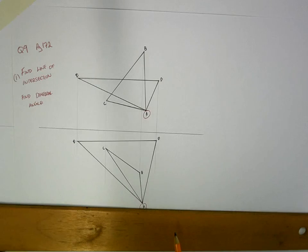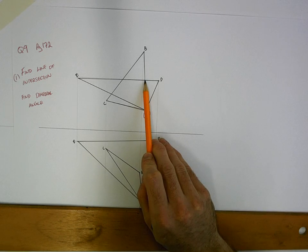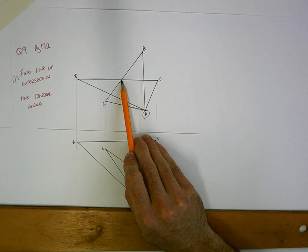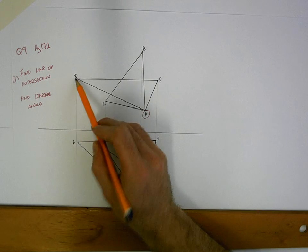That line is cutting through both of the planes. It cuts through the plane ABC at this point and this point. And it cuts through the second plane, ADE, at point D and point E.